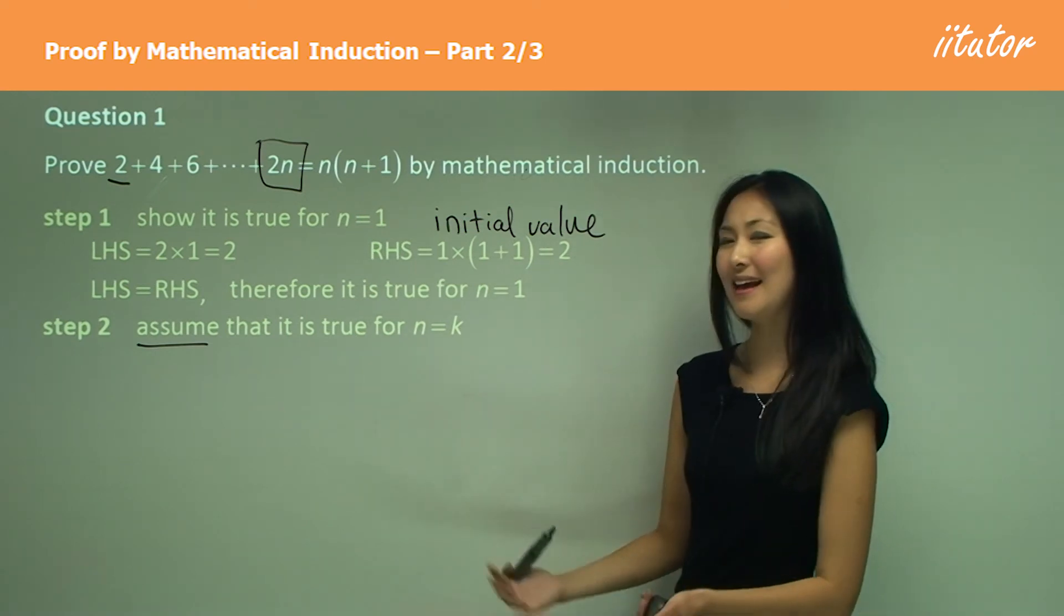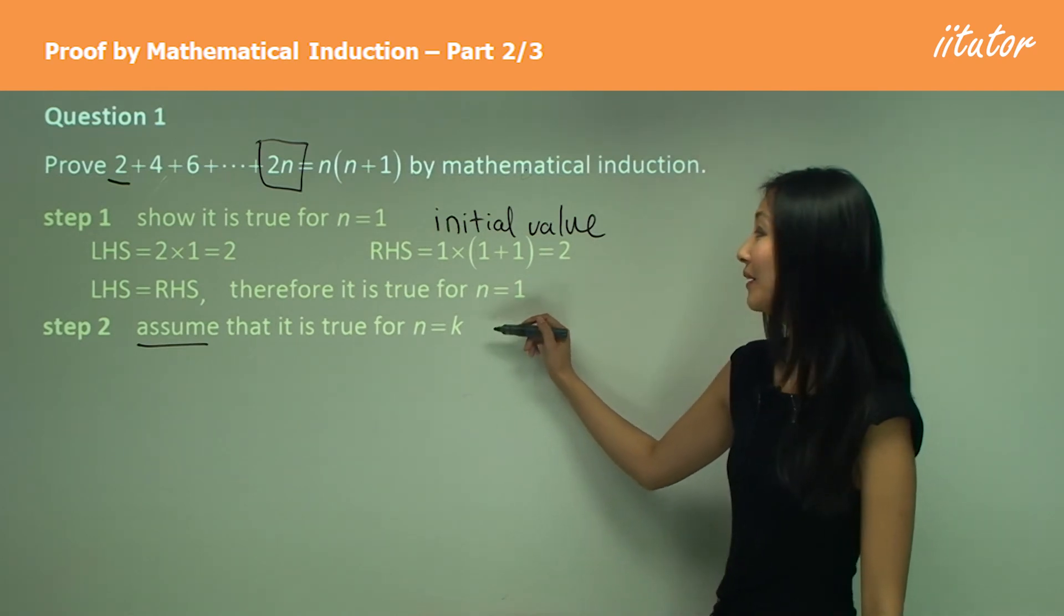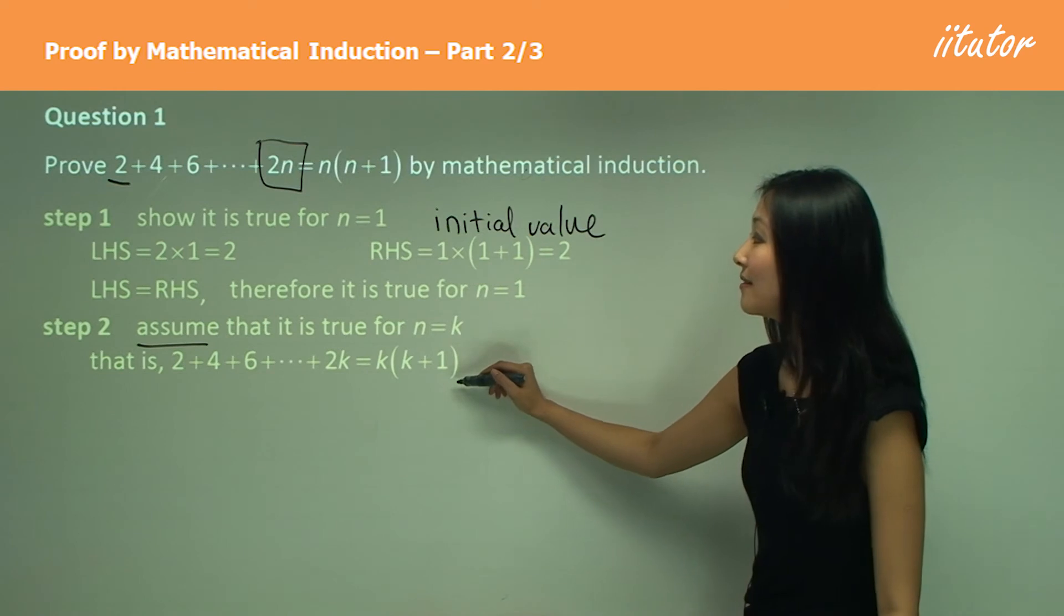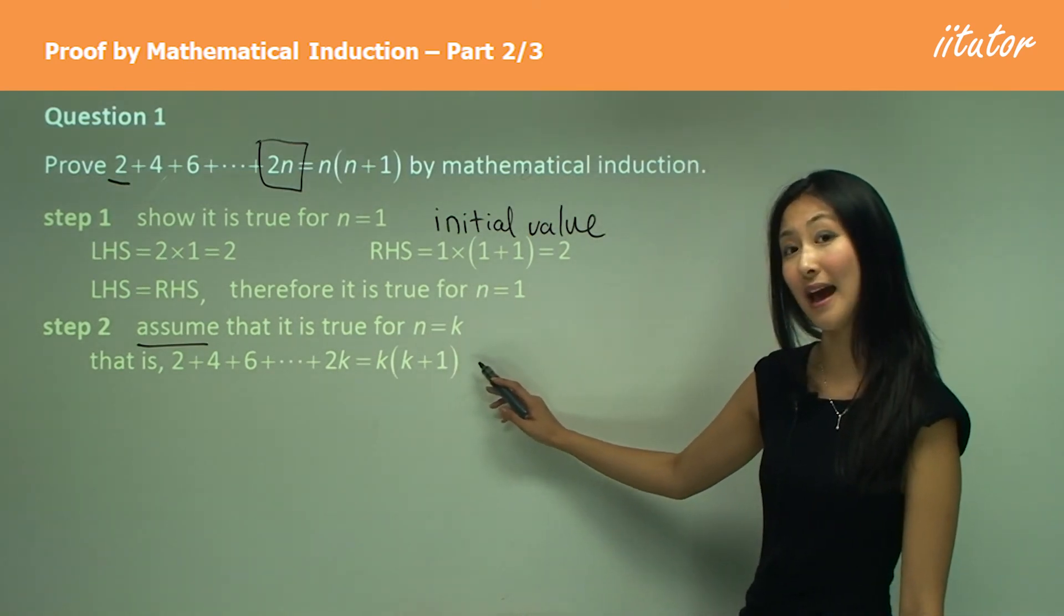So we're making an assumption here. How do we do that once we've written that? Well, we just substitute k into wherever there's n. So this becomes 2k and this becomes k times k plus 1.